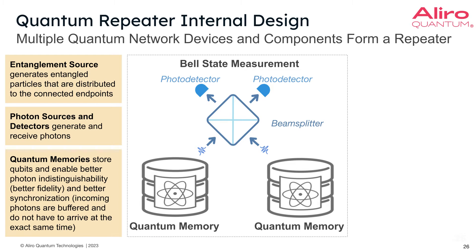There's also quantum memories, which are critical. These quantum memories are what allow the repeater to store the actual qubits, and they enable things like better indistinguishability — which is really better fidelity — and better synchronization and timing of the incoming photons that can then be buffered within the memories. In other words, photons do not need to arrive all at the same time or in the same sequence.